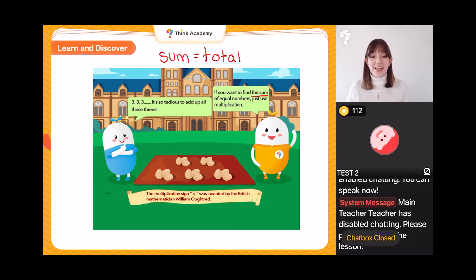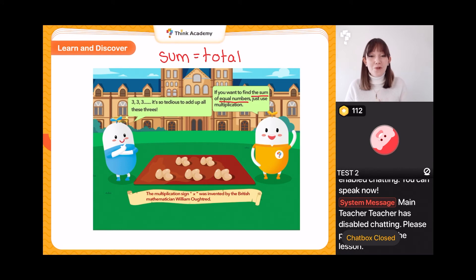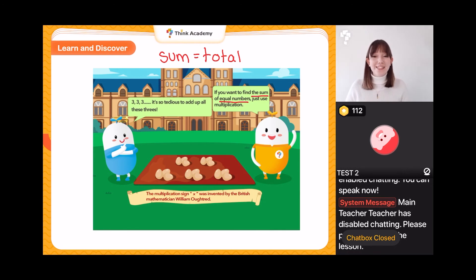If you want to find the sum of equal numbers, this is also really important — when we do multiplication, we have to make sure all our groups are the same size. We saw Pip was adding up groups of three, so all his groups were the same size. That's really important for multiplication.